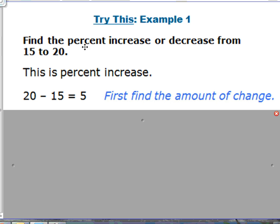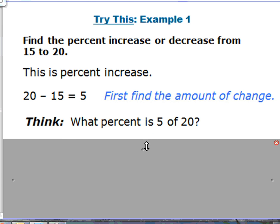Now notice I'm not subtracting the original number from the second number because that would get us a negative number and we can't really have a negative percent. So what we're doing is we're actually just finding how much it changes, so that's where this five comes from.